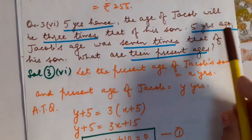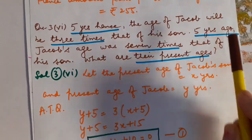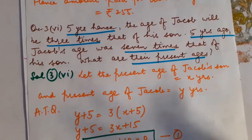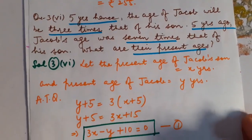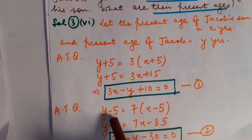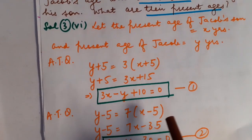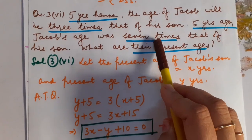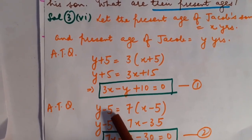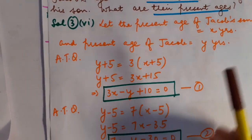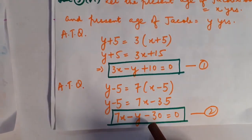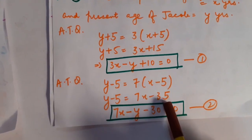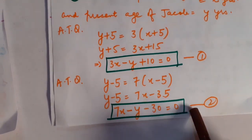Now case number 2: five years ago. If my present age is 20 years, then five years ago my age was 20 minus 5 = 15 years. Applying the same concept: Jacob's age five years ago was Y minus 5 and his son's age was X minus 5. Five years ago Jacob's age was 7 times his son's age, so Y minus 5 = 7(X minus 5), giving the equation 7X minus Y minus 30 = 0.